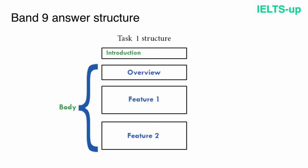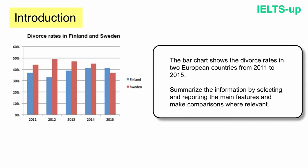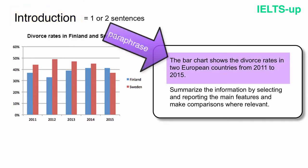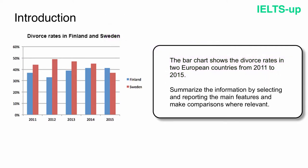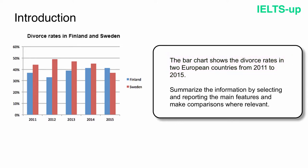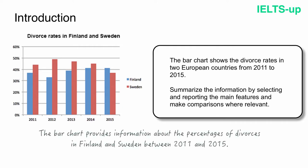Now let's start writing our band 9 answer. The introduction is one or two sentences where you simply paraphrase the information from your question. You should mention what your graph shows and for what period of time. Instead of copying the original, write a paraphrased version using synonyms. Here is how I wrote it: 'The bar chart provides information about the percentages of divorces in Finland and Sweden between 2011 and 2015.'